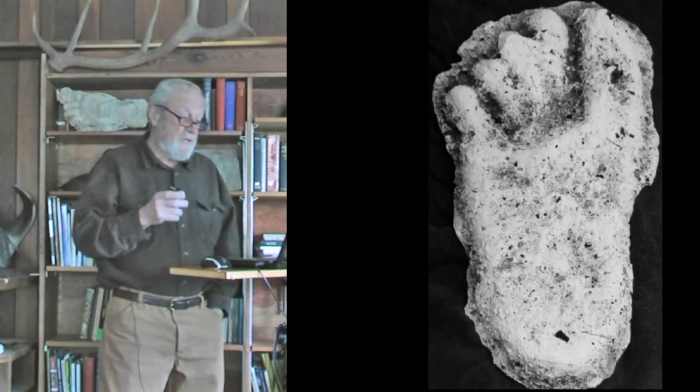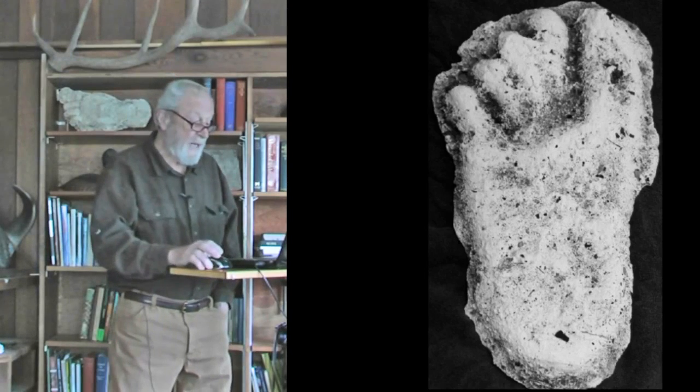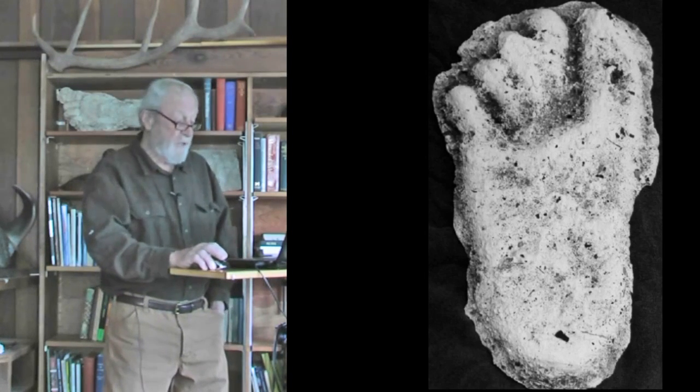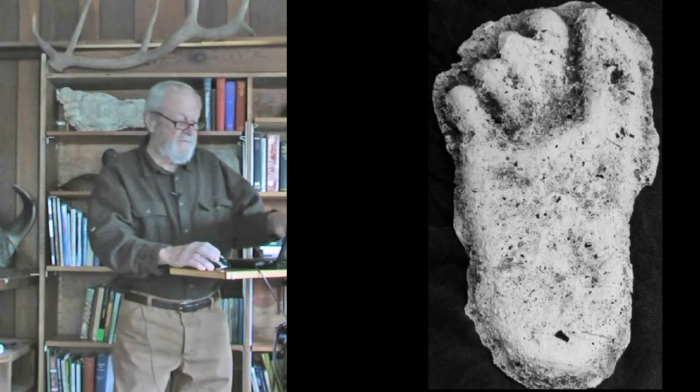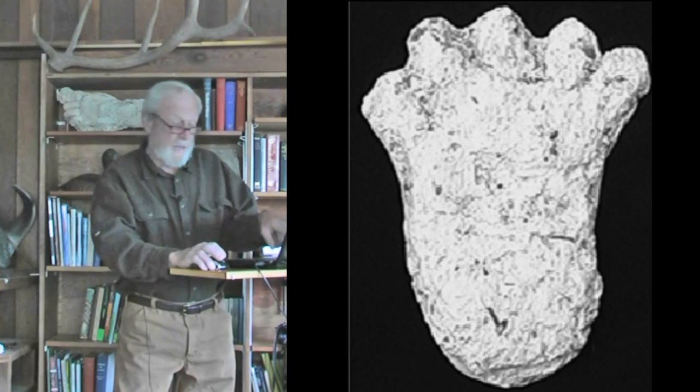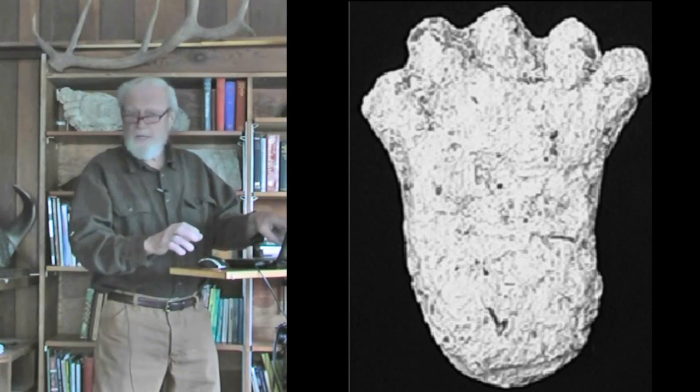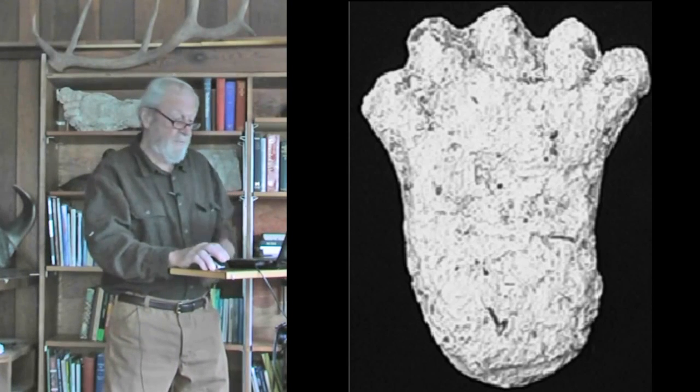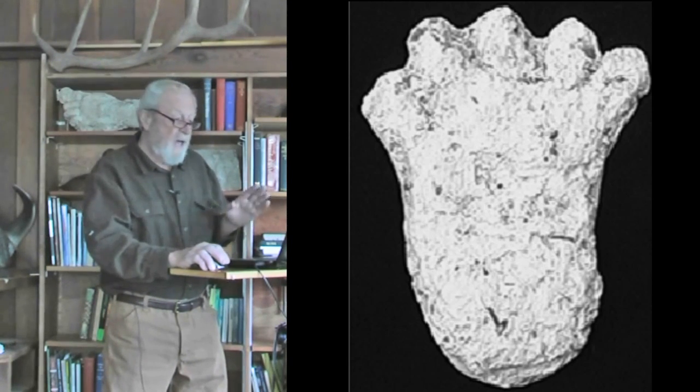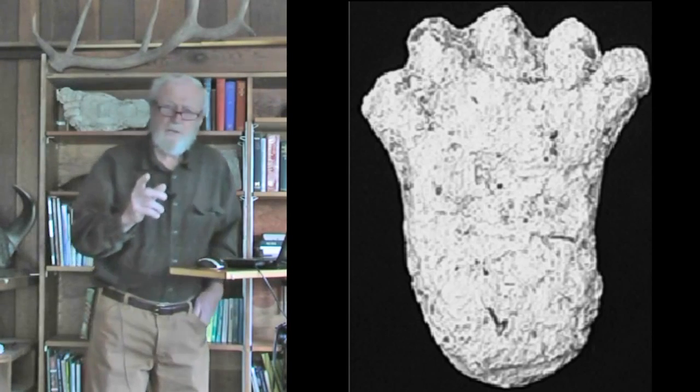One quite consistent feature of Sasquatch tracks is that they tend to be broad compared to their length — wider than the human foot or human tracks. This is quite an extreme example from Pennsylvania, where the width of the foot behind the toes is fully 50% of its length. And similarly, in this rather small Sasquatch track, only eight inches in length, the width of the foot behind the toes is fully 50% of the length. That broadness differs from the human foot, which tends to be narrower even when it does get to be 16 inches long.